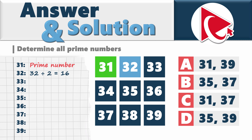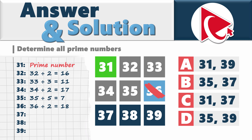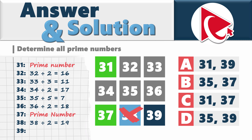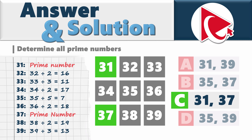32 can be divided by 2, and the end result is 16, so 32 is not a prime number. Same with 33 — it can be divided by 3. 34 can be divided by 2. 35 can be divided by 5. 36 can be divided by 2. 37 is a prime number — you can go through the same chain of exploration as we did for 31. 38 is not a prime number, and 39 is not a prime number. So the correct answer here is Choice C: 31 and 37.